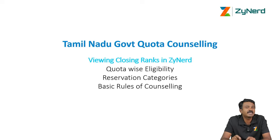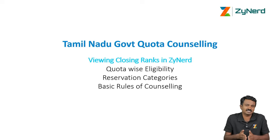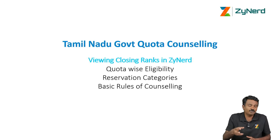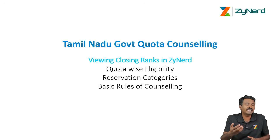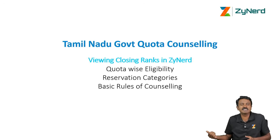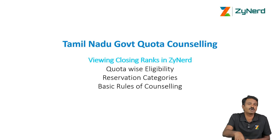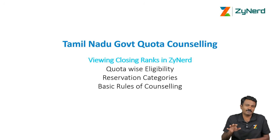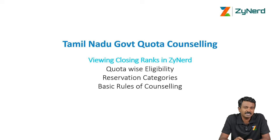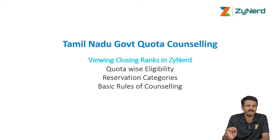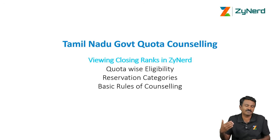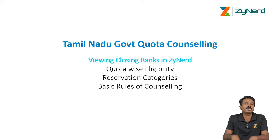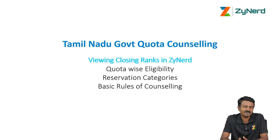At any rank, the candidate's category is not critical — the seat category is critical. Because at that rank, if there was a BC open seat available, even if it was taken by a BC service candidate, you would have been eligible for it as a BC candidate. Please go with Zynard's information or any source that gives you the seat category and not the candidate's category. We do detailed videos on this, taking 4-5 days to map the category and upload the data every year, including updates for stray and special stray rounds.